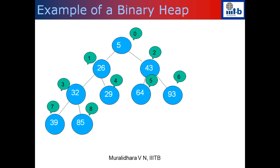We can also do a level-order traversal of the tree and write down the level-order numbers for each node. Starting with the root, I give it label 0. Then 26 gets label 1, 43 gets label 2, 32 gets label 3, 29 gets label 4, 64 gets label 5, 93 gets label 6, 37 gets label 7, and 85 gets label 8.